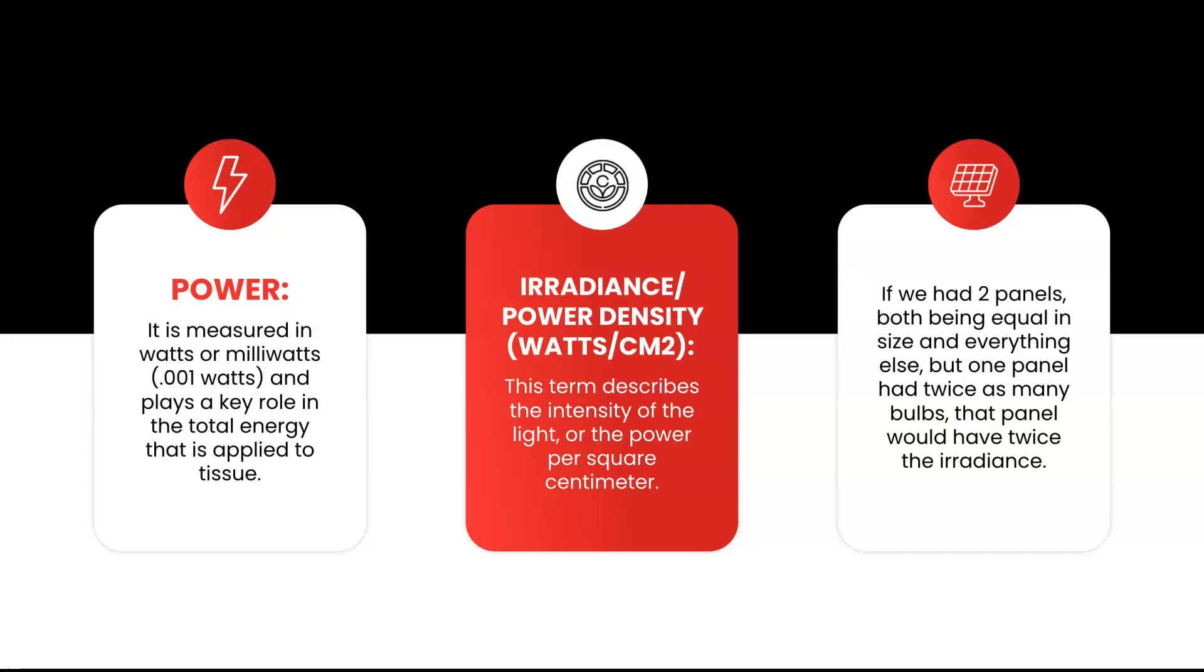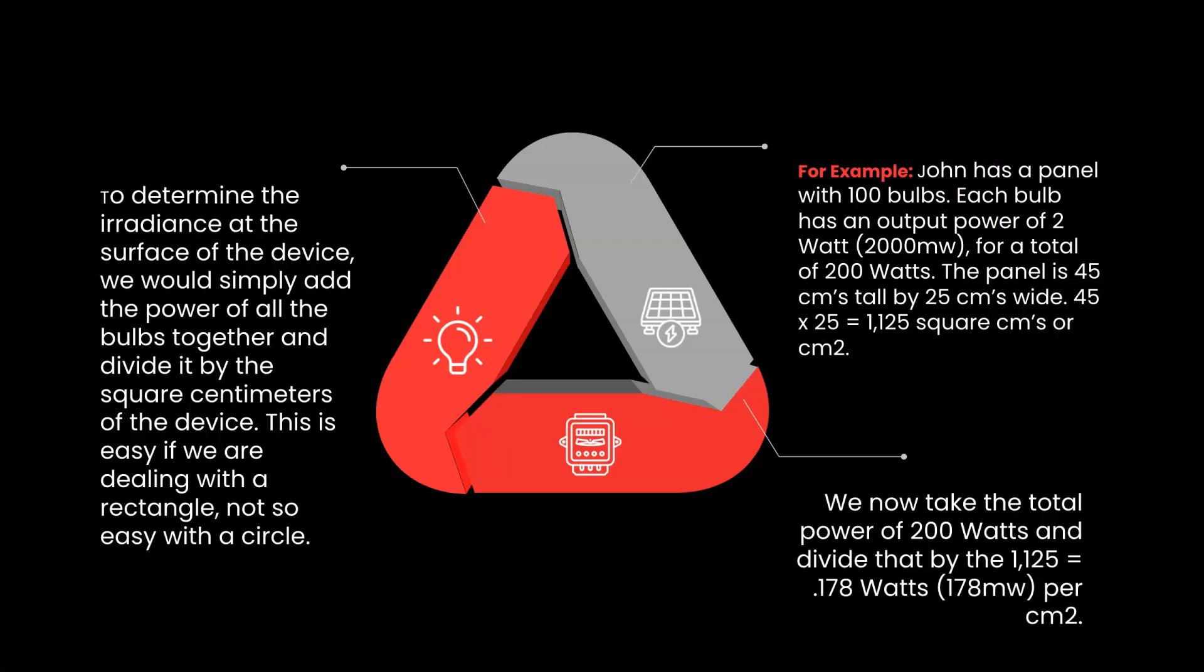This number does not mean much. Irradiance is a more appropriate number as it describes the amount of power over a specific area, typically per square centimeter. If we had two panels of equal size and equal strength in watts per bulb, but one panel had twice as many bulbs, that panel would have about twice the irradiance or twice the amount of power per area. To determine the approximate irradiance at the surface of the device, we would simply add the power of all the bulbs together and divide it by the total square centimeters on the device. This is relatively easy if we are dealing with a rectangular device as opposed to a circular or oval shaped device.